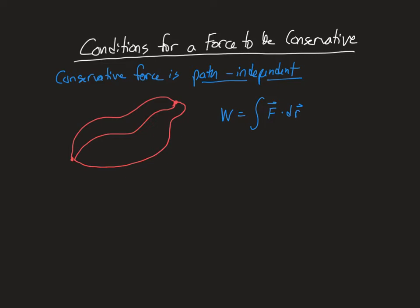Recall that the work done by a force is the integral of the dot product of the force dotted with the infinitesimal displacement, and so when you go from R1 to R2 — from the first point to the last point — the path independence of this work means that if I took this path versus this path versus this path, they would all be equal to each other. So the work done on each path would be exactly the same.